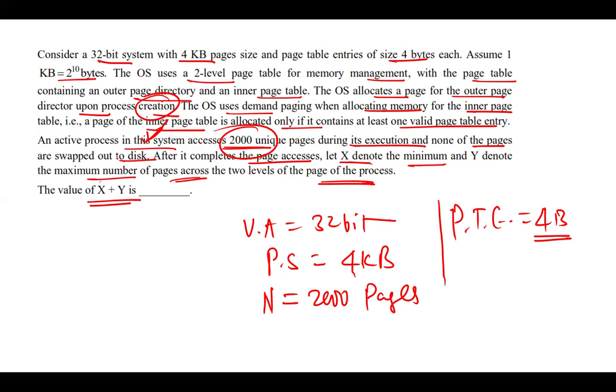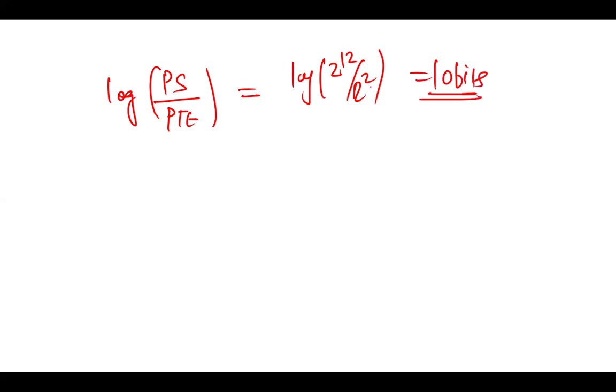The total number of bits needed to represent the outer page table is log of PS divided by PTE, that is page size divided by page table entry size. That is log of 2^12 divided by 2^2, so we get 10 bits. The total number of bits needed to represent the inner page table will be 32 minus 10 minus 12, that is 10 bits.